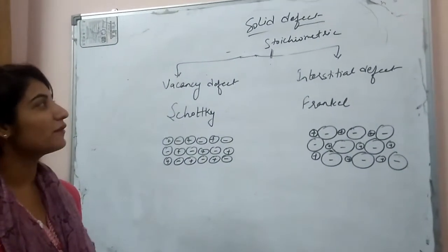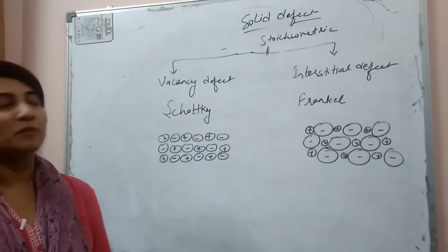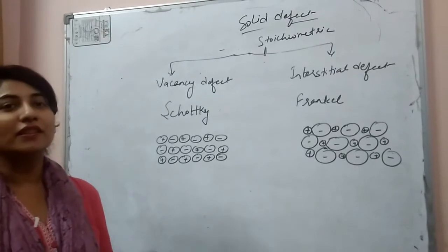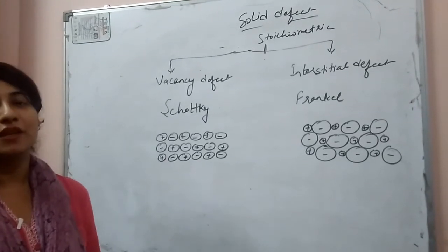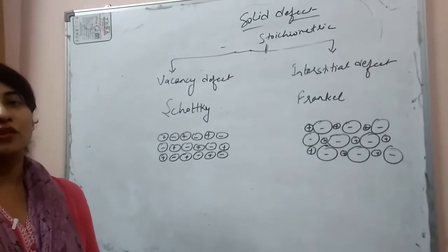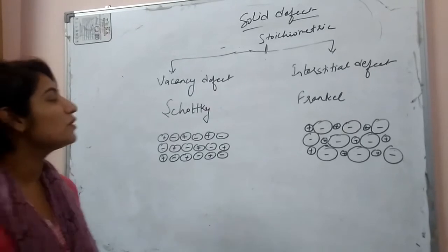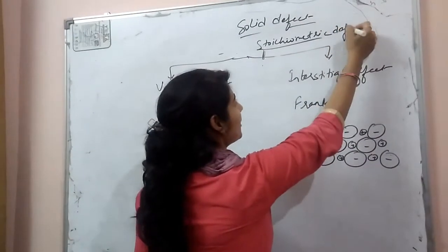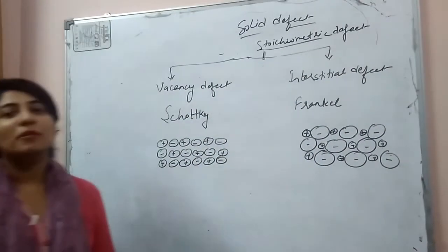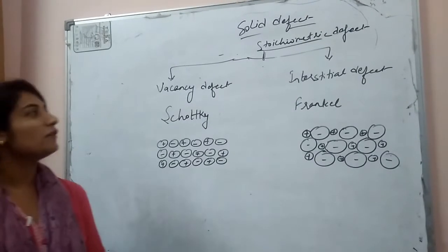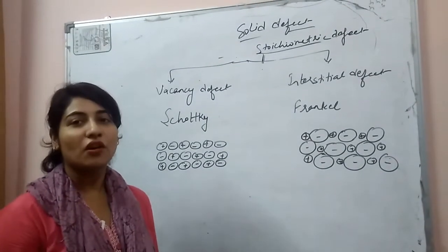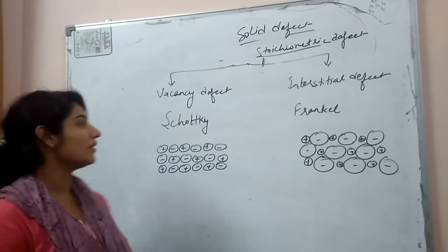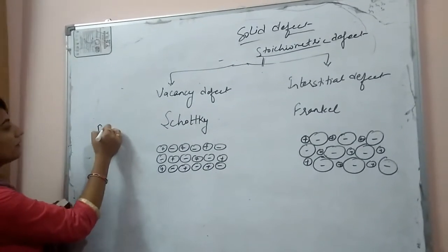Today we are going to discuss solid defects. Solid defects may be of three types: first type is point defect, second type is line defect, and third type is plane defect. But here we are going to discuss only point defects, in which the first type is stoichiometric defect. Stoichiometric defect means there will be no change in the stoichiometry of any compound, or we can say there will be no change in the ratio of any compound.